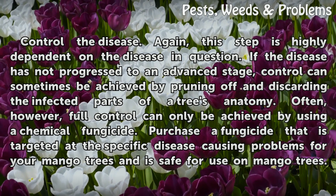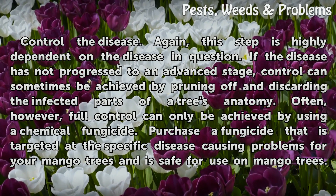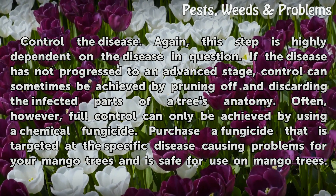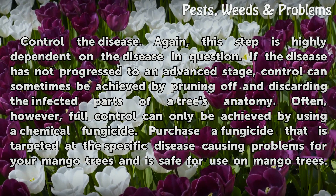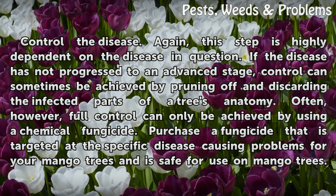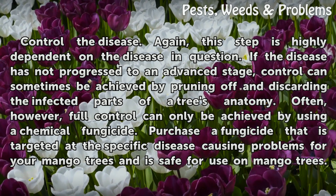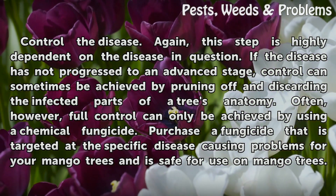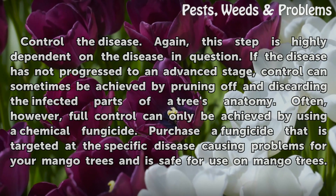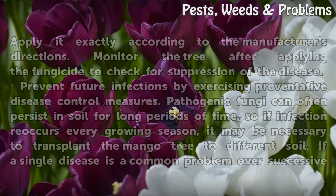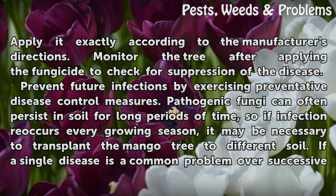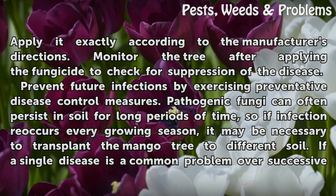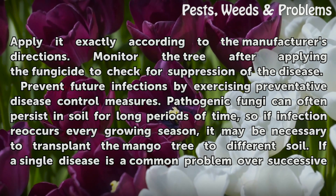Control the disease. This step is highly dependent on the disease in question. If the disease has not progressed to an advanced stage, control can sometimes be achieved by pruning off and discarding the infected parts of a tree's anatomy. Often, however, full control can only be achieved by using a chemical fungicide. Purchase a fungicide that is targeted at the specific disease causing problems for your mango trees and is safe for use on mango trees. Apply it exactly according to the manufacturer's directions. Monitor the tree after applying the fungicide to check for suppression of the disease.